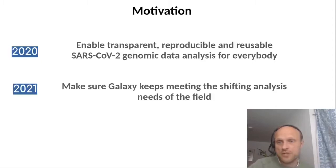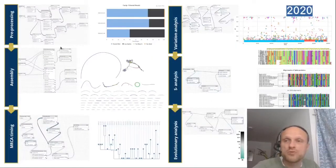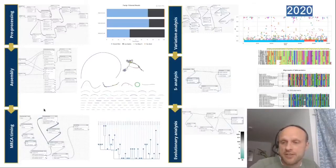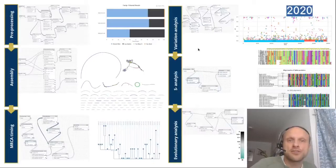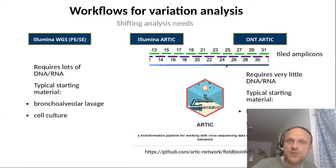Since then, in 2021 or end of 2020, we definitely added a second motivation: to make sure Galaxy keeps meeting the shifting analysis needs of the field. When we started out in February 2020, when the SARS-CoV-2 pandemic hadn't even really started, people were interested in assembly of the viral genome. There were not many viral isolates from China at the time, very few from outside China, and an initial workflow for variation analysis. The SARS-CoV-2 reference sequence was new, so we started doing variant calling against that reference and different other types of evolutionary analysis, even early selection pressure analysis on the spike protein.